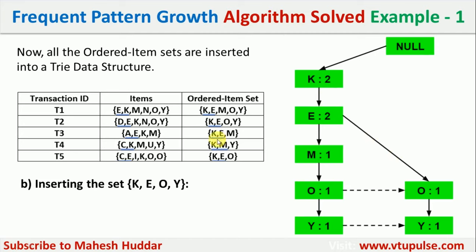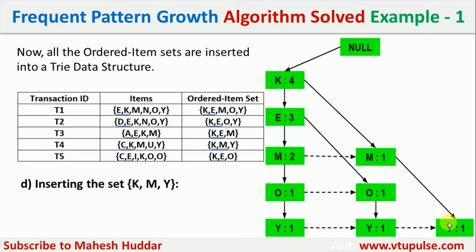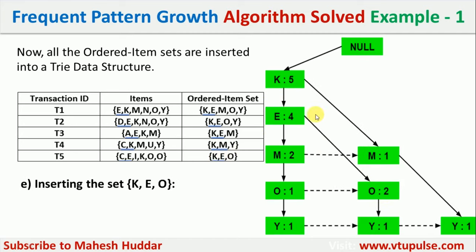For transaction 3 (K, E, M), K, E, and M are visited again, incrementing to K(3), E(3), M(2). For transaction 4 (K, M, Y), there is no direct path from K to M, so M and Y are added as new child nodes of K with frequencies 1 each. For transaction 5 (K, E, O), there is a direct path, so K becomes 5, E becomes 4, and the O node under E becomes 2.